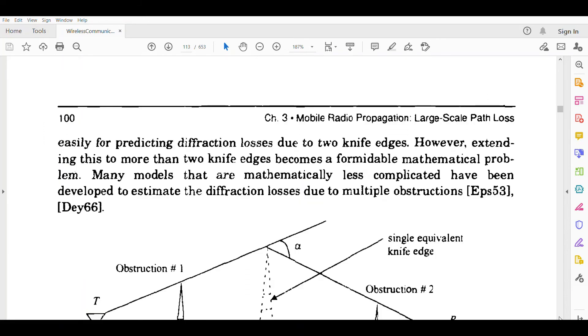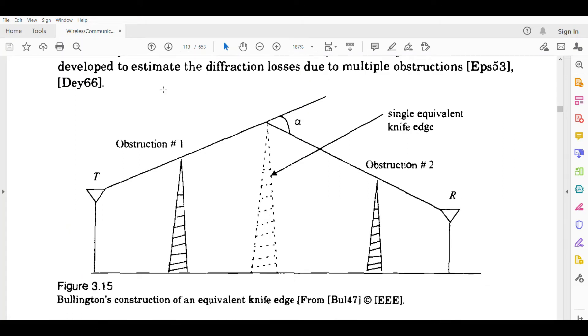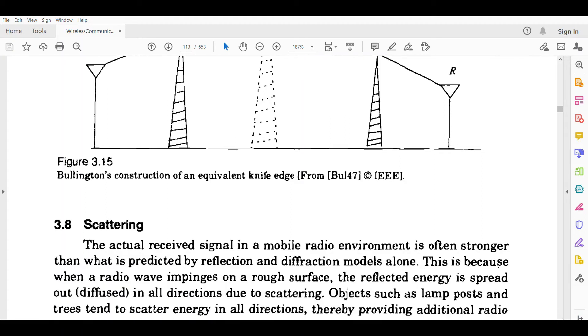Now, multiple knife edge diffraction. Let's see what happens when there are multiple knife edges - there will be obstructions in two or three places.